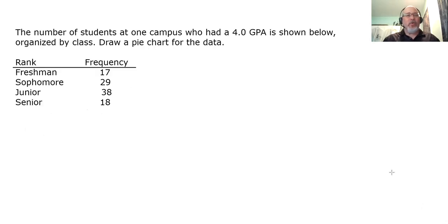In this particular example, we have data illustrating the number of students at one campus who had a 4.0 GPA organized by class. 17 freshmen, 29 sophomores, 38 juniors, and 18 seniors all had GPAs of 4.0. To draw a pie chart, the first thing we need to do is calculate the percent of the whole that each of these represents. So the first thing we need to do is figure out how many people were surveyed or how many people are in this data set. That's pretty easy to do. All we have to do is find the sum of the frequencies. And I've already added them up. If you add up 17, 29, 38, and 18, you get exactly 102.